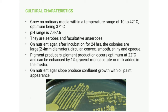On nutrient agar after 24 hours incubation, they produce large, circular, convex, smooth, shiny, opaque, and easily emulsifiable colonies. Most strains produce a golden yellow pigment incorporated into the colony without diffusing into the media. Pigment production only occurs in aerobic culture, is optimum at 22 degrees Celsius, and can be enhanced by adding 1% glycerol monoacetate or milk to the medium.